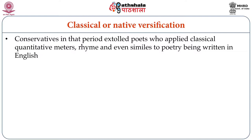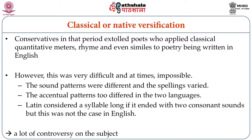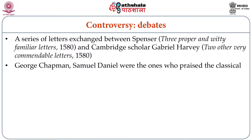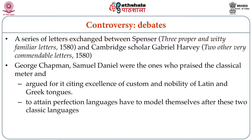During this period, there was a great deal of controversy about whether poets should follow classical or native versification. The conservatives of this period extolled poets who applied classical quantitative meters, rhyme and even similes to poetry being written in English. However, there were others who said that this was very difficult and almost impossible, because the sound patterns of the two languages were different and the spellings also varied. George Chapman and Samuel Daniel were the ones who praised the classical meter and argued for it, citing excellence of custom and nobility of the Latin and Greek tongues. They felt that in order to attain perfection in any language, it was necessary to model the language after the two classical languages, Latin and Greek.